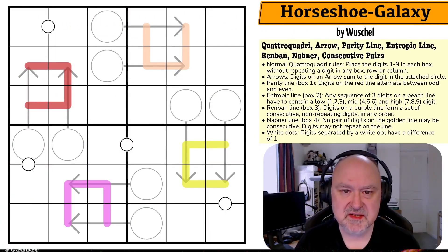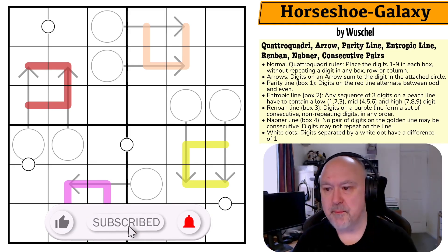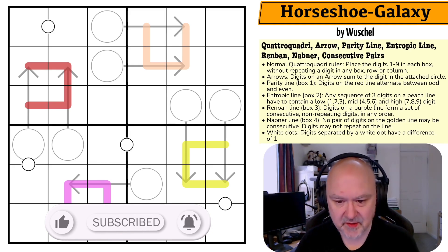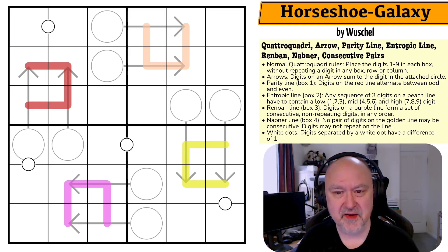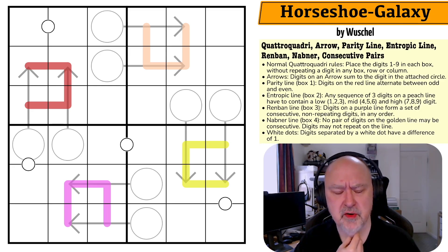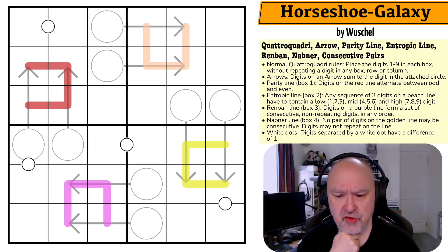Good morning everyone, this is Bremster and today I'm returning to the world of Quattro Quadri with a puzzle called Horseshoe Galaxy by Wushel. This one looks like there's a lot going on, but that doesn't mean I have any clue as to how I'm going to solve it, because Quattro Quadri are always a little bit overwhelming. I've done quite a few on the channel — I should create a playlist. There's a Fog playlist, but I should do one for Quattro Quadri too.